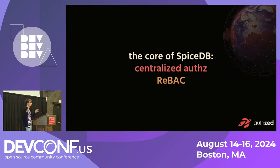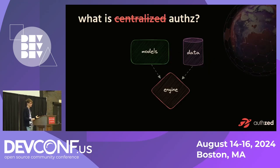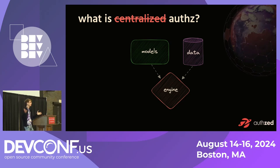There are two major foundational concepts in the Zanzibar paper that lend themselves to achieving this scale: centralized authorization and ReBAC. I'll go over centralized authorization first. I break authorization down into three components: model, data, and engine.